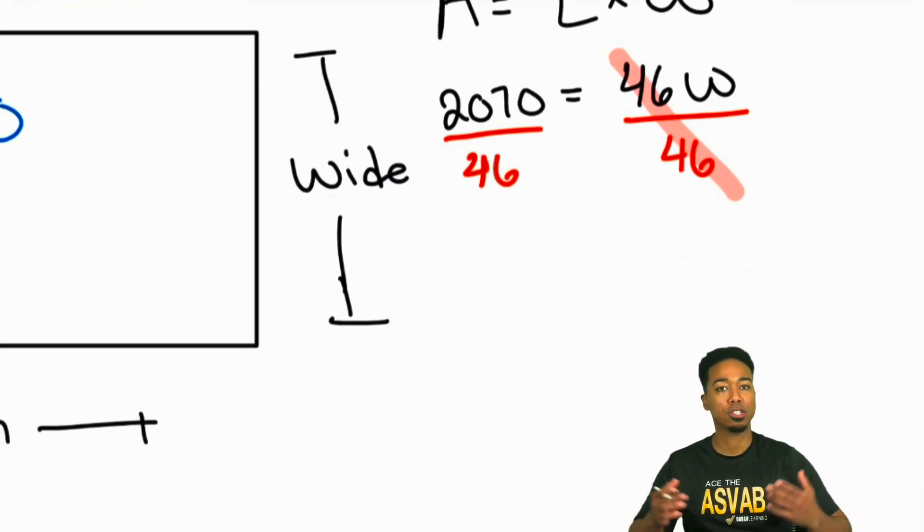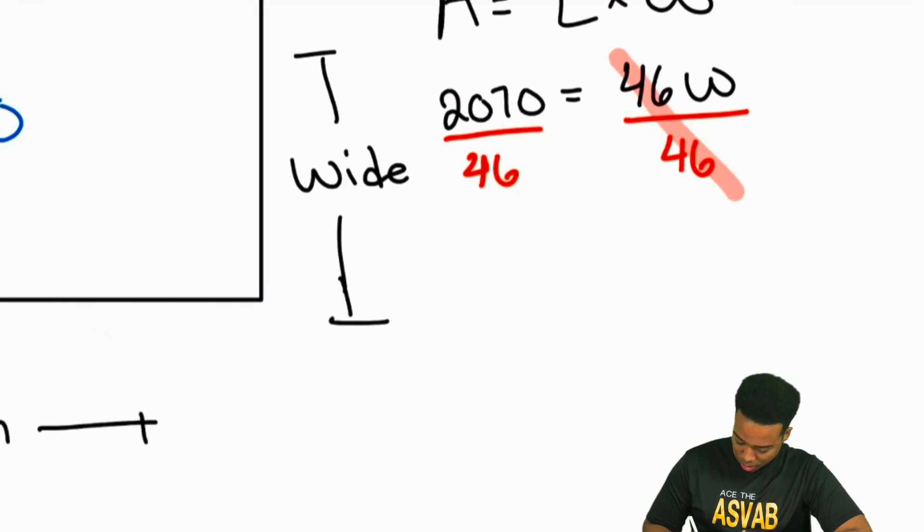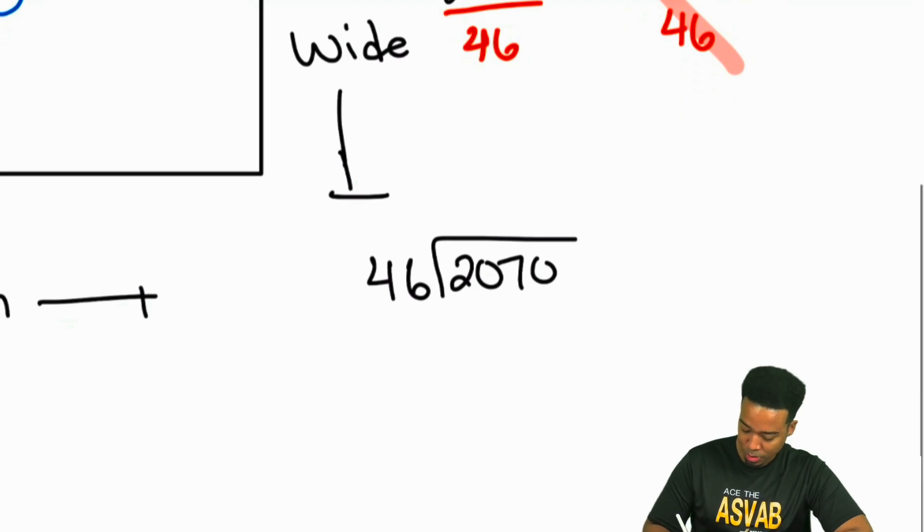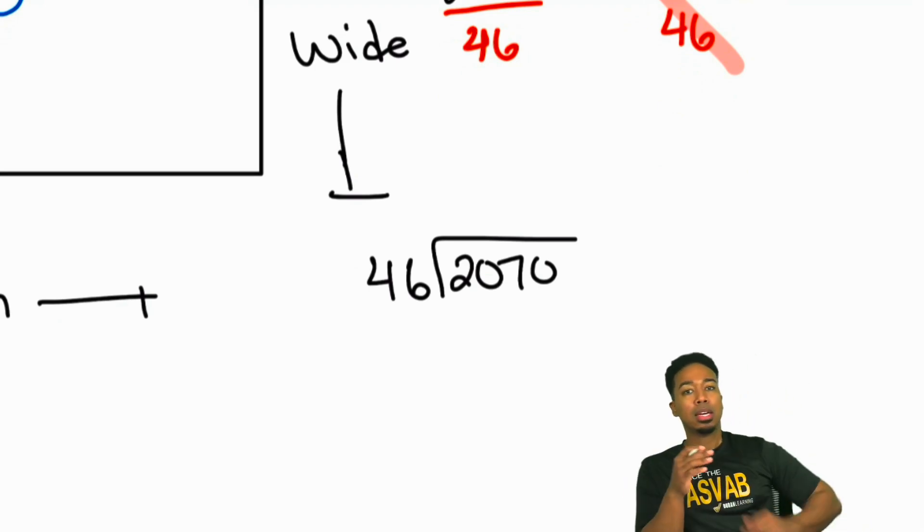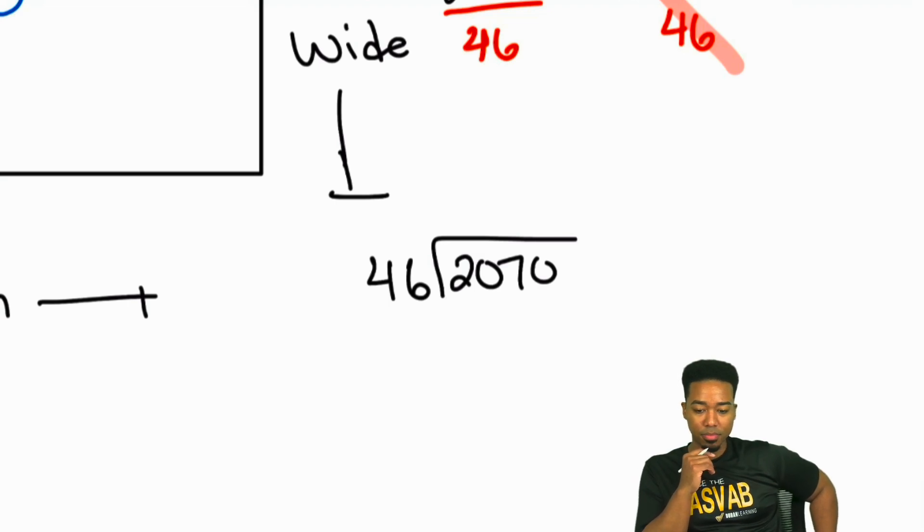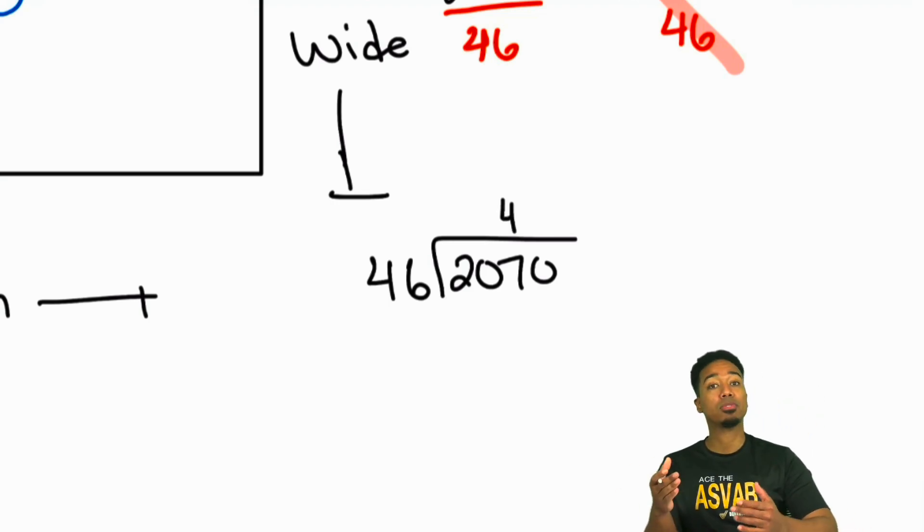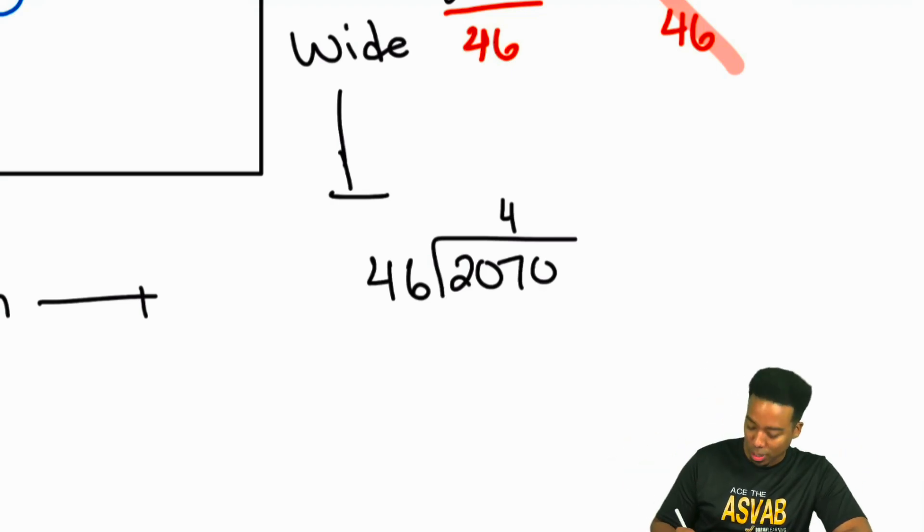And so from here, 2070 divided by 46, we have to figure out what that is. So once we do that right over here, 46 goes into 2070. So 46 goes into 207. How many times everybody? How many times does 46 go into 207? Right. It's going to be four times. It can't be five, five would end up being 230. Not going to work. So that would end up being 4. 46 times 4. Well, 40 times 4 is 160. 6 times 4 is 24. So that would end up being 184.